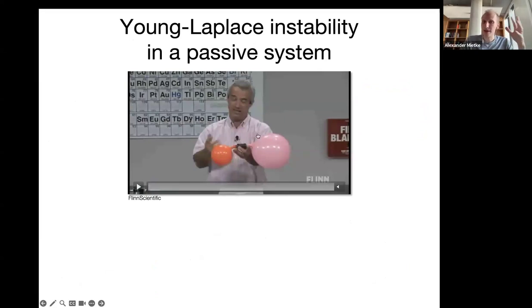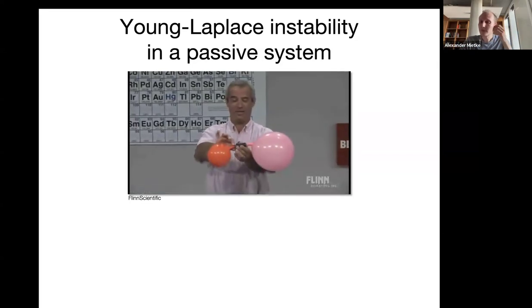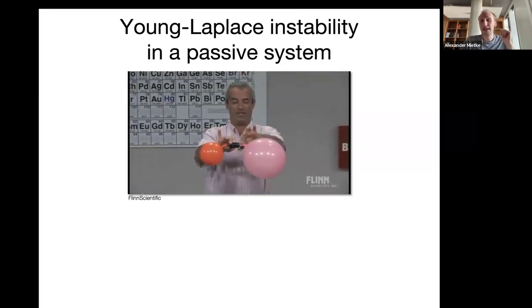I just pointed out that these myosin motors and in general the cortex itself is under tension. So if you think about two balloons, this person here is basically connected to air balloons through a valve that at the moment is closed. He intentionally has put a certain size asymmetry on these balloons. And at the beginning of the movie, what he will do is to open the valve. You may guess now what happens as he opens the valve, as basically the volume becomes a single volume that connects these two balloons.